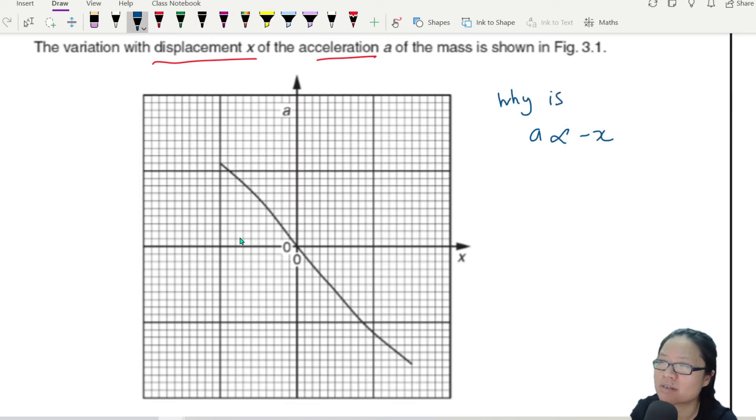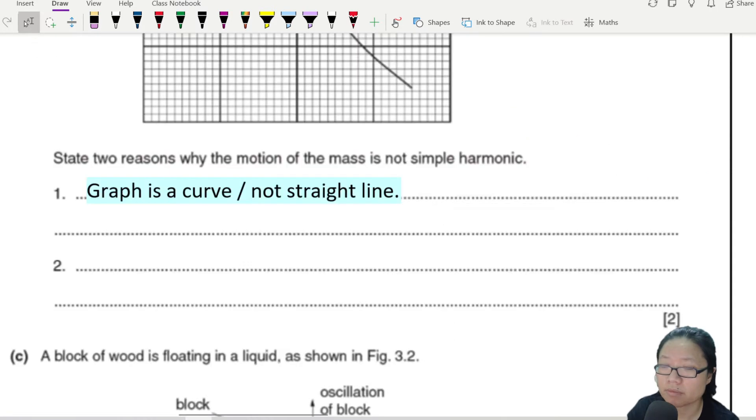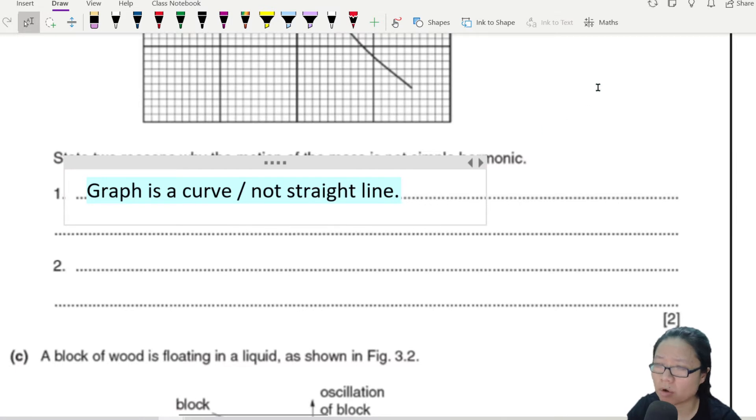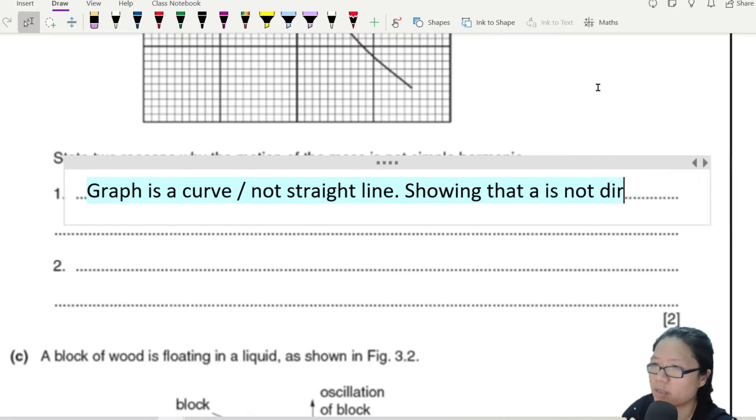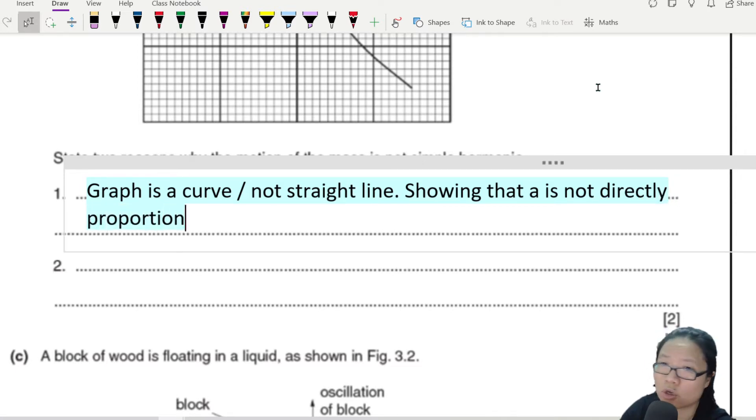Why is this a proportional to negative x not shown in the graph? First things first, the graph ain't a straight line. So if it's not a straight line, it is not proportional to negative x. Graph is a curve or the graph is not a straight line, showing that a is not directly proportional to x.